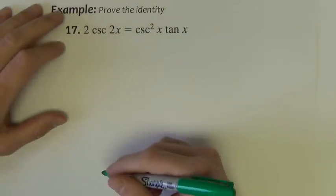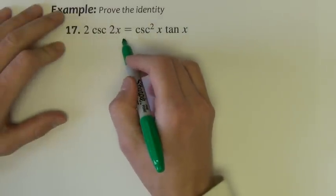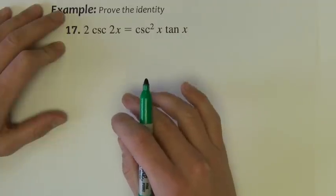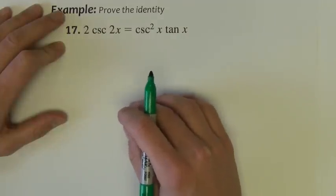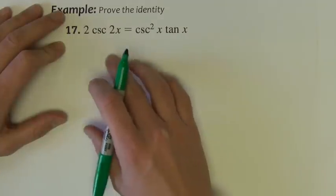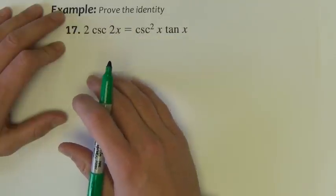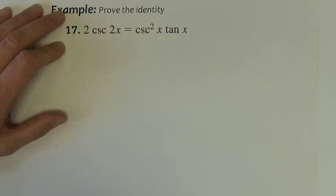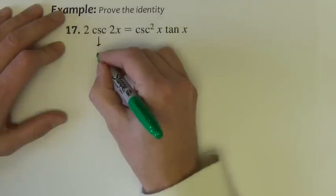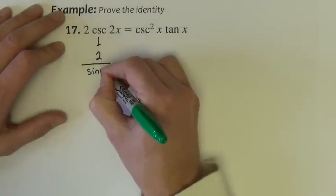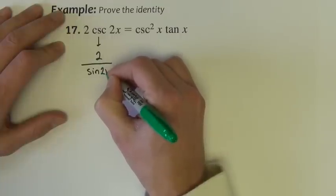Here we're starting with 2 cosecant 2x. Now we don't have a cosecant 2x, but we have a sine 2x, and cosecant and sine are reciprocals. So whenever we see a reciprocal function of the three original ones, we just use the appropriate reciprocal. So this is the same as 2 over sine 2x.